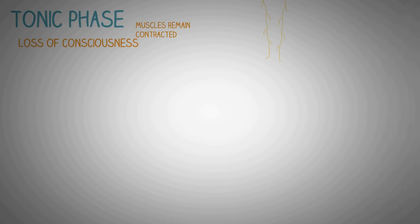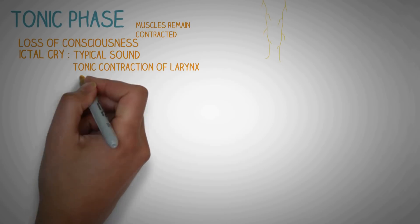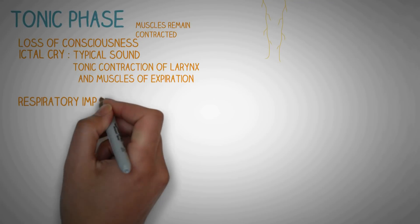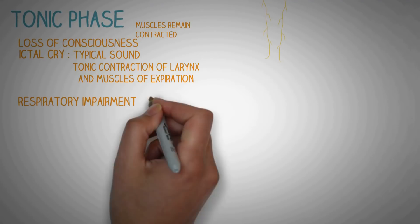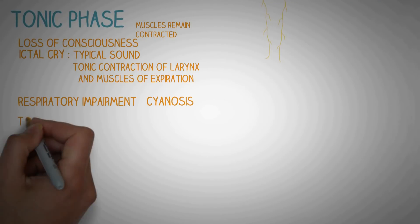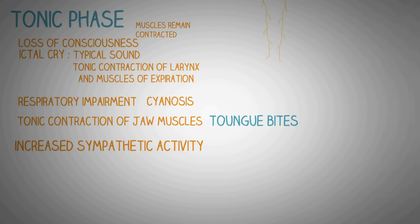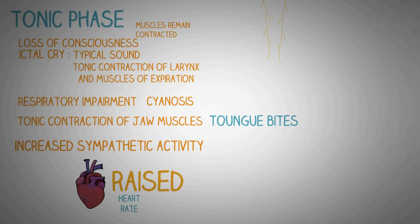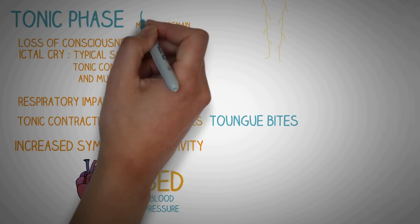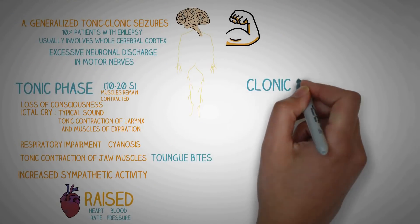There is also loss of consciousness in the patient. The tonic phase is characterized by many symptoms, including the ictal cry — a typical sound produced by the tonic contractions of the muscles of the larynx and expiration. Another characteristic is impairment of the respiratory drive, which causes cyanosis in the patient. There are also tonic contractions of the muscles of the jaw, due to which tongue bites can occur. In addition, there is increased sympathetic discharge from the brain, causing increased heart rate and blood pressure. The tonic phase usually lasts for 10–20 seconds and then transforms into the clonic phase.